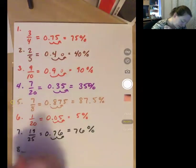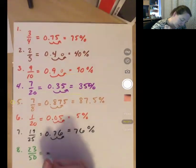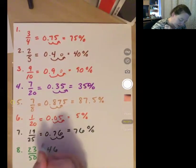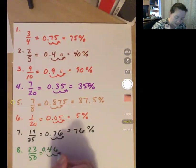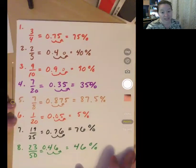And finally, number 8, 23 over 50 is 0.46, move it over twice, and becomes 46%.